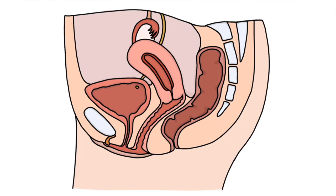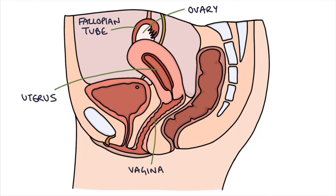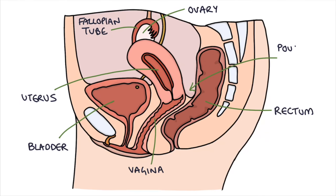Now look at this other diagram, which is the side-on view of the pelvis. You can see the uterus and the vagina, and up here you can see one of the ovaries and the fallopian tubes, and how they relate to other structures such as the bladder and the rectum. This little space between the uterus and the rectum is called the pouch of Douglas, and it's worth knowing about that because it's quite a common place for endometrial tissue to settle.